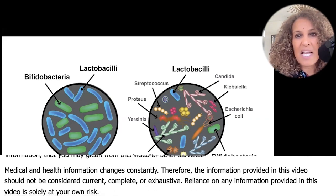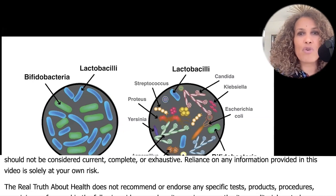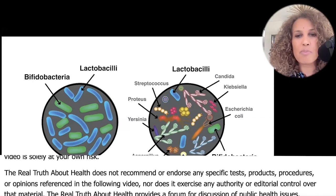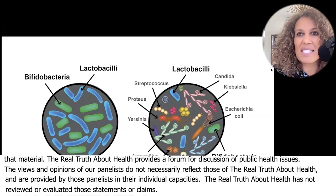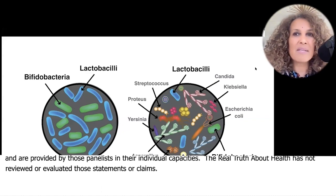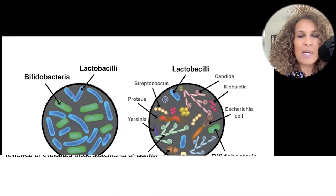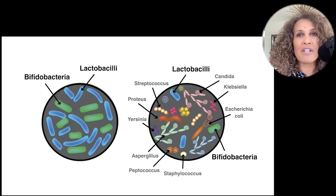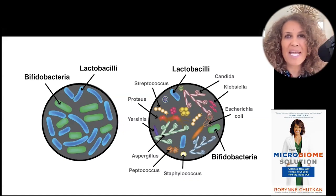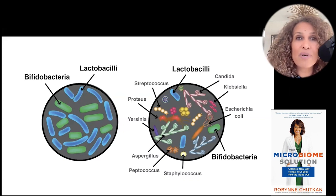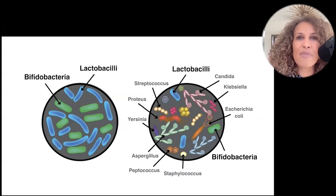As you see here represented in this graphic, you see lots now of Streptococcus and Yersinia and Aspergillus and Peptococcus and Staphylococcus and Candida species and Klebsiella and E. coli. None of these organisms on their own, when they're represented at a typical low level, are particularly problematic. But it's when they overgrow out of control that we now have dysbiosis. I cannot stress enough how important it is to recognize that the root cause of dysbiosis is not the overgrowth — it's the undergrowth of the healthy species.